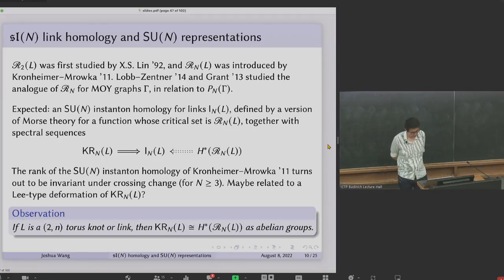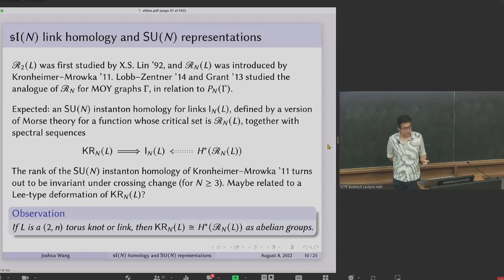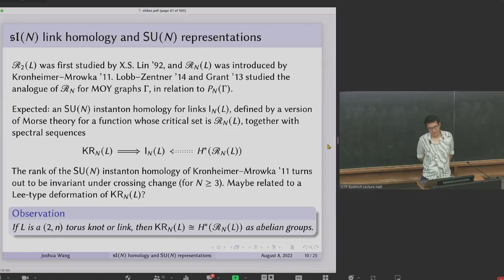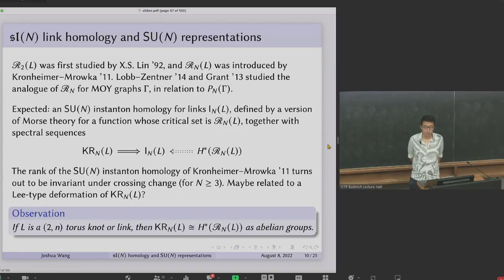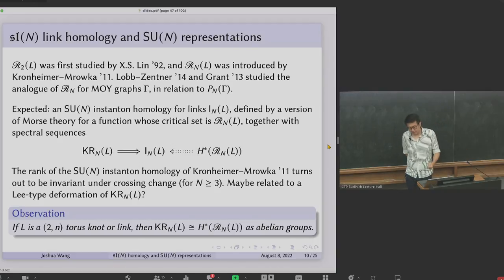Regarding bigradings: analogous to the base point action on Khovanov homology giving a module over Z[x]/x², a base point in the SLN setting gives the structure of a module over Z[x]/x^N. There's also a reduced variant, like reduced Khovanov homology. The representation space is actually a fiber bundle over CP^{N-1}, and the induced map on cohomology makes the cohomology of the representation space into a module over H*(CP^{N-1}) = Z[x]/x^N, and they match up.